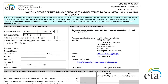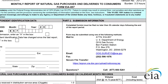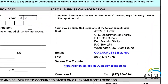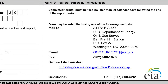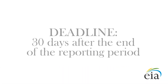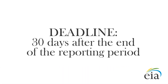If you look at Part 2, you'll see several options for submitting your form to EIA once it's complete. EIA accepts the form via mail, email, fax, or secure file transfer. Please note that your EIA 857 form is due 30 days after the end of the reporting period. For example, this means that the report for October is due by November 30th.